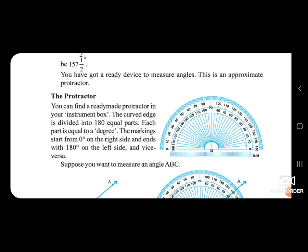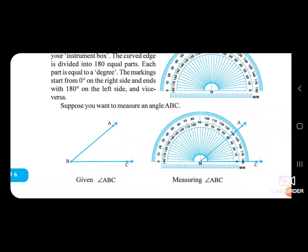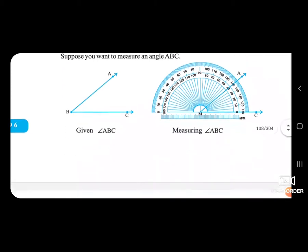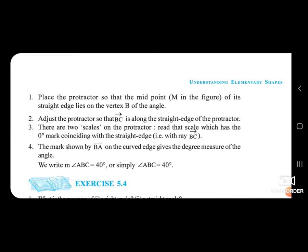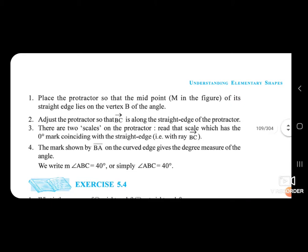If you want to measure angle ABC — angle ABC is equal to 40 degrees. Place the protractor so that the midpoint M of its straight edge lies on the vertex B of the angle.